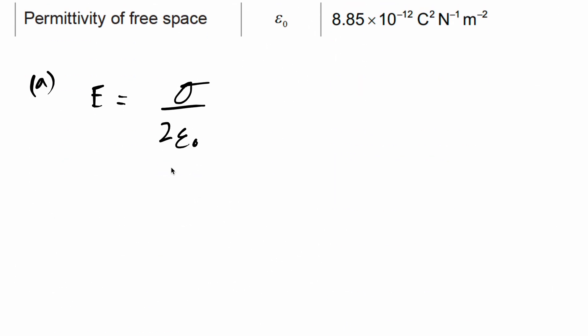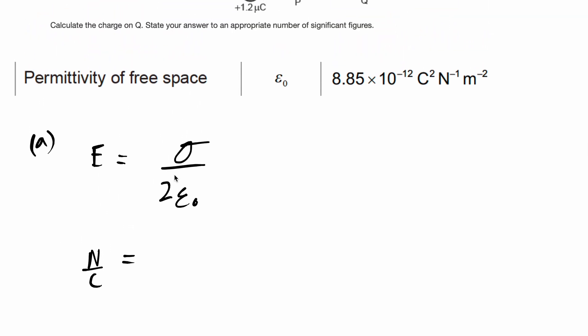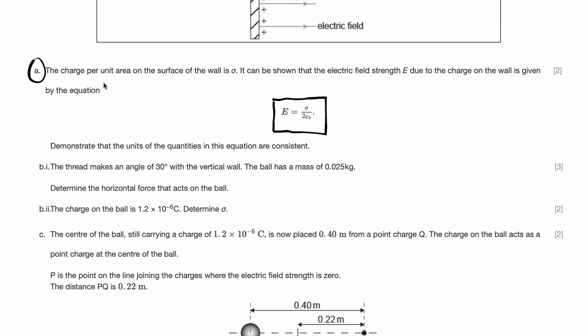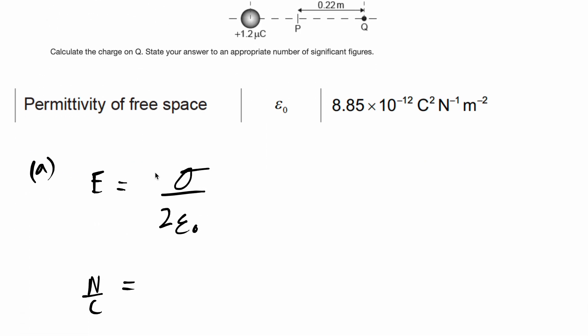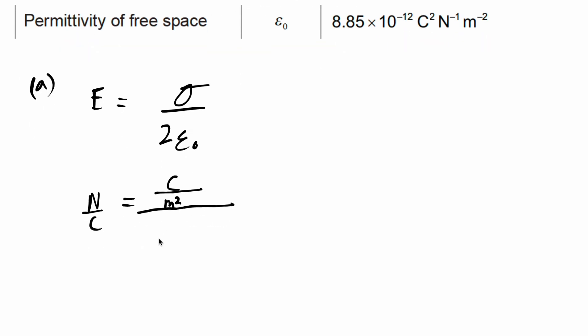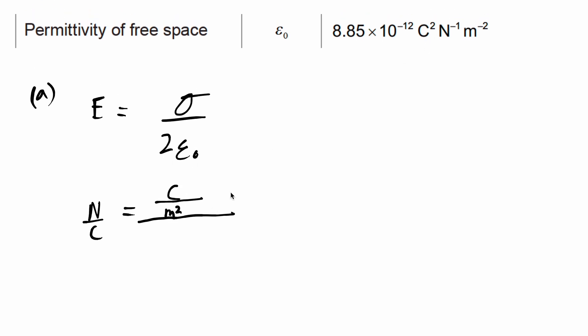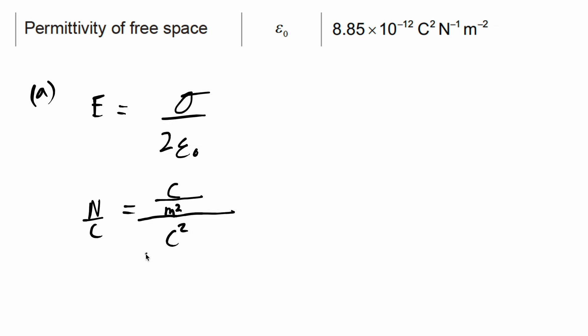We know the equation is E equals sigma over 2 epsilon 0. So what is the unit for electric field strength? It is Newton per coulomb. And let's find out the units for this right hand of the equation and see if it equates to Newton per coulomb. So the unit for sigma is, well, it's given here. It is charge per unit area.